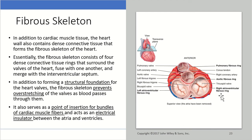That brings us to the fibrous skeleton of the heart. In addition to cardiac muscle tissue, the heart wall contains dense connective tissue that forms the fibrous skeleton of the heart. This consists of four dense connective tissue rings that surround the valves of the heart, fuse with one another, and merge with the interventricular septum. The fibrous skeleton forms the structural foundation for the heart valves, prevents overstretching of those valves, serves as a point of insertion for bundles of cardiac muscle fibers, and acts as an electrical insulator between the atria and ventricles.